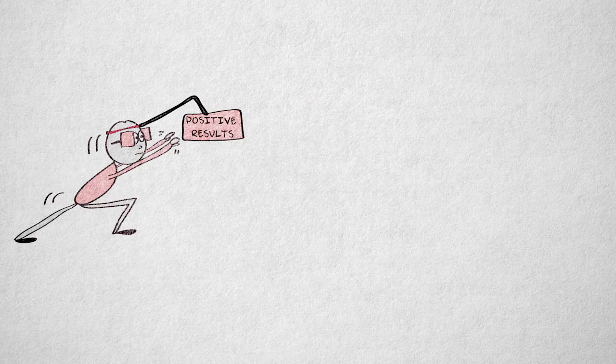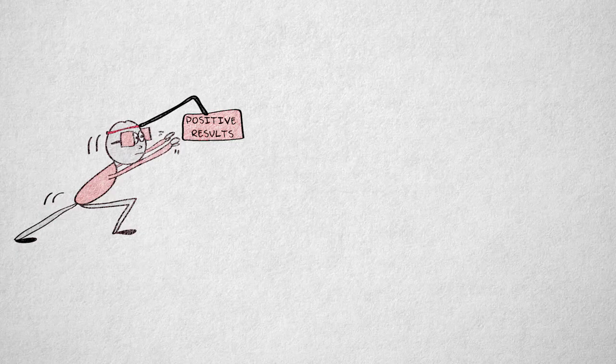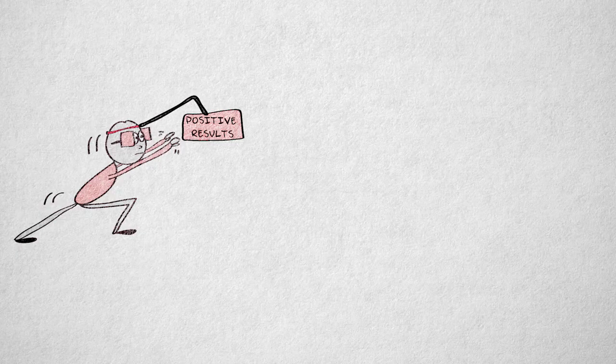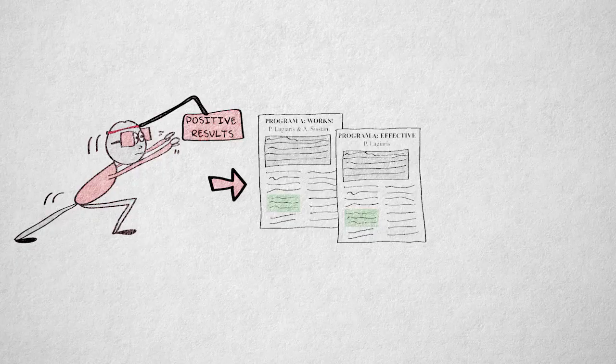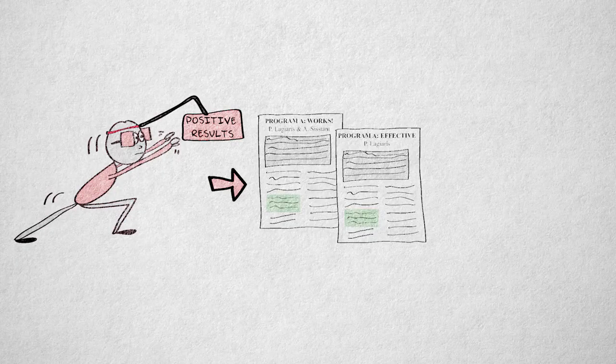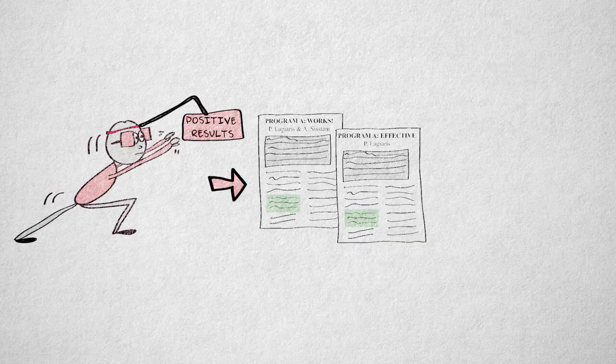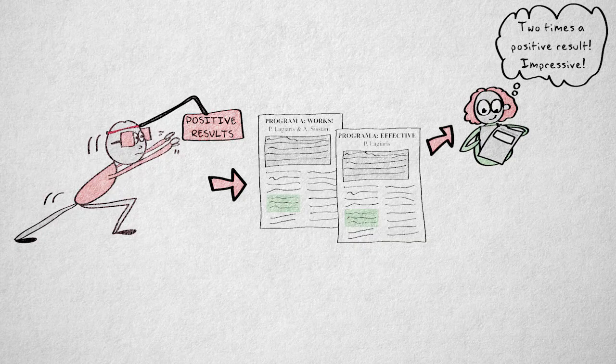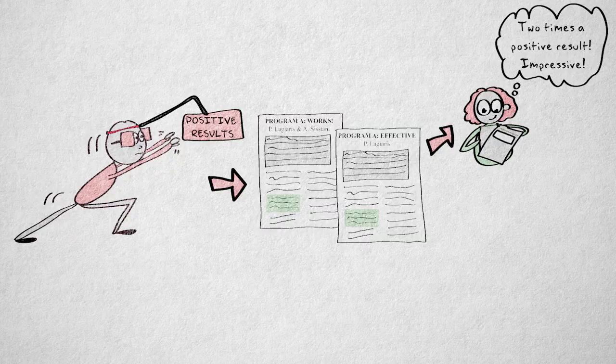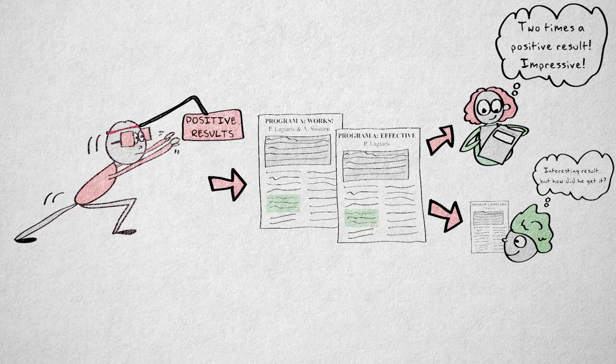The large pressure on researchers might be to blame for a relatively new type of plagiarism called self-plagiarism. This might seem like a contradiction in terms. How can you plagiarize yourself? Well, presenting a substantial scientific contribution that was already published elsewhere as an original contribution contaminates the literature with redundant information, and it makes it harder to gather relevant information if the original source is not referred to.